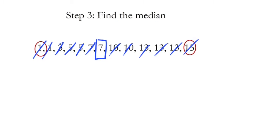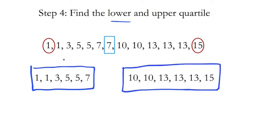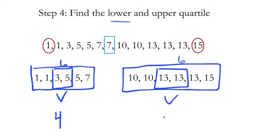In step number four, we want to find the lower and upper quartiles. We get rid of the median — taking out the seven. The lower numbers are 1, 1, 3, 5, 5, and 7, and the upper numbers are 10, 10, 13, 13, 13, and 15. There are six numbers on each side. To find each quartile, we find the median of these two different number sets. The numbers in the middle of the lower set are three and five, so the average is four. On the upper set, we have 13s in the middle, so the average is 13. Your lower quartile is four and your upper quartile is 13.